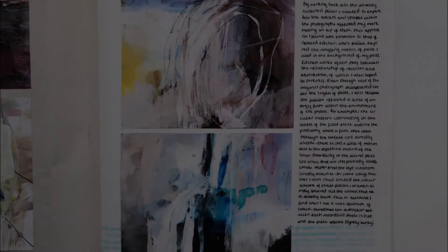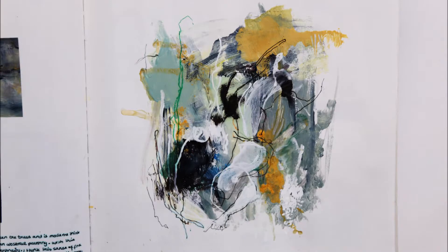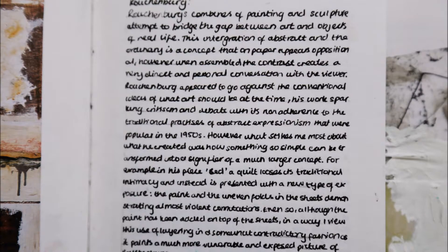There is a productive use of photography that informs the journey and pushes ideas forward. Once again, a good example of the ongoing primary sources, and it develops the relationship between source and abstraction, which is picked up when analyzing Gerhard Richter. Richter's works often play between the relationship of realism and abstraction, of which the candidate also hopes to portray. Further comment on this relationship between realism and abstraction is seen when annotating Rauschenberg, who she says seeks to bridge the gap between art and objects of real life and the integration of abstract and the ordinary.